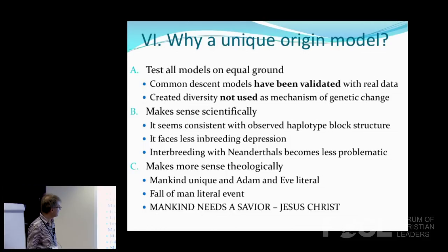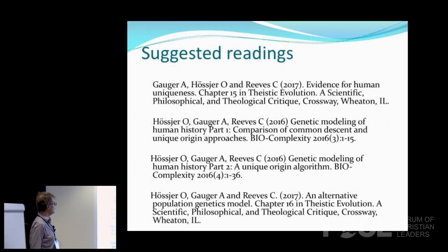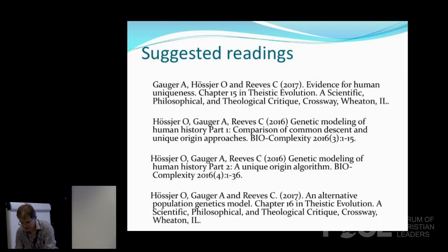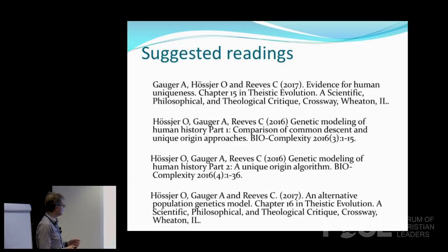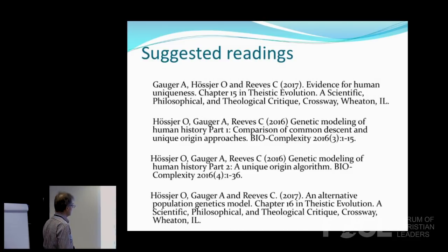We published two papers in Biocomplexity in 2016. The first paper gives an overview comparing the common descent and unique origin models; the second presents the unique origin algorithm. Andrew Jones has implemented this and is validating it on real data. We also have two chapters in the book Theistic Evolution: A Scientific, Philosophical and Theological Critique that came out last year. Thank you very much for your attention.